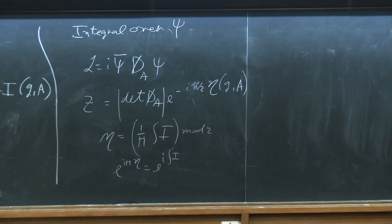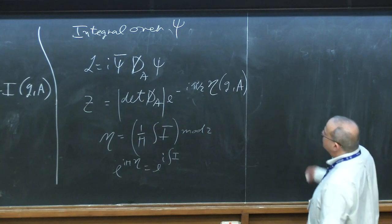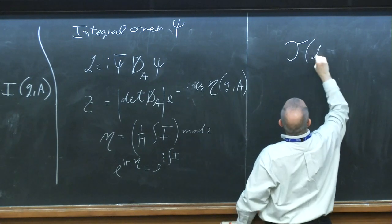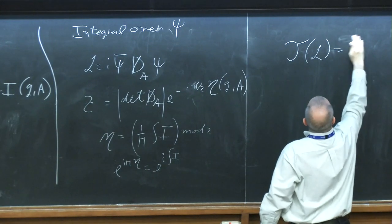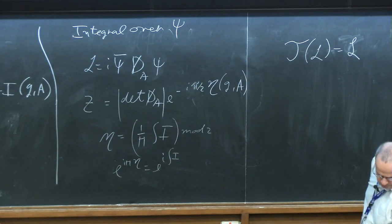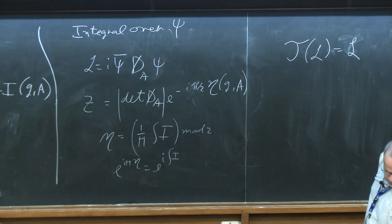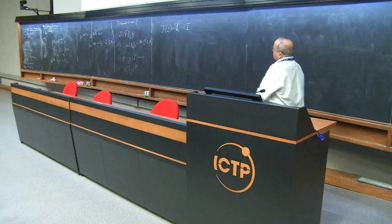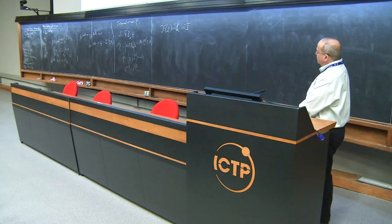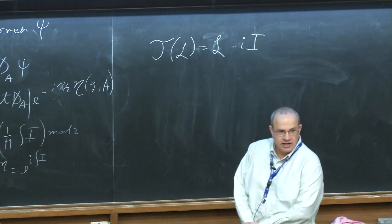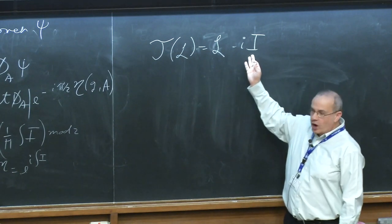We can now ask what happens under time reversal. On the time reversal transformation, this Lagrangian gives the same Lagrangian but shifted by Chern-Simons level one for A and a certain gravitational Chern-Simons term. So the free fermion Lagrangian looks like it's time reversal invariant, but in fact it's not — when we perform time reversal it is shifted by Chern-Simons level one. This is a typical anomaly: the theory looks time reversal invariant but it isn't.